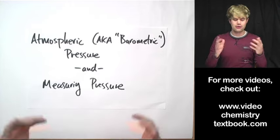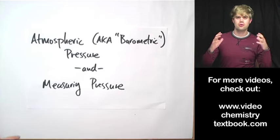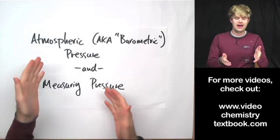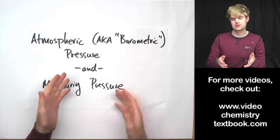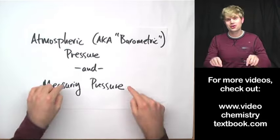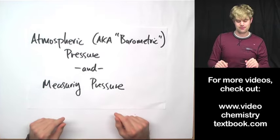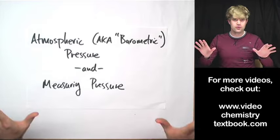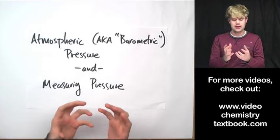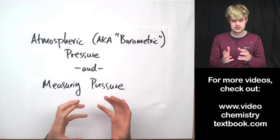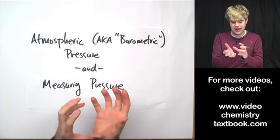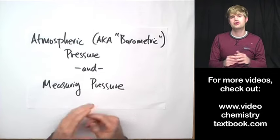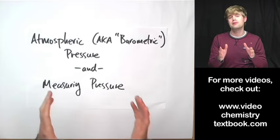Did you know that the air all around us pushes on us — it pushes on things? It's called atmospheric pressure, sometimes referred to as barometric pressure. We're going to learn about that in this video. We're also going to learn about how we can measure the pressure of both the gas in the atmosphere and the amount of pressure in something like a gas tank. To measure pressure we use devices called manometers and barometers.